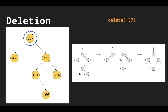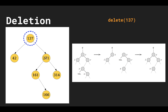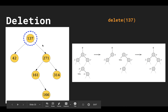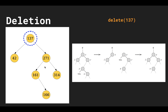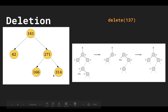Let's apply Case 3 to delete 137. It has two children and the right child (271) has a left subtree, so we can't directly replace 137 with 271 — that would violate the invariant since 161 and 166 would end up on the wrong side. Instead, we find the minimum in the left subtree of 271, which is 161. We replace 137 with 161, and then replace 161 with 166. This is the resulting valid binary search tree.